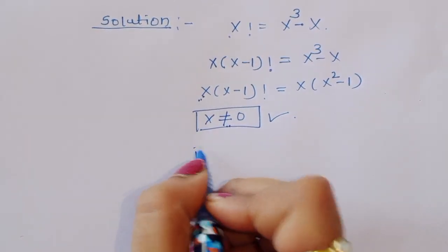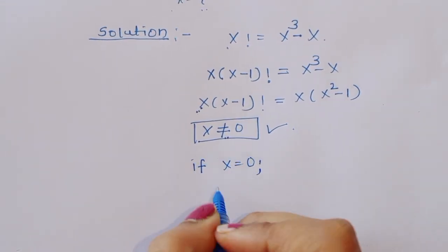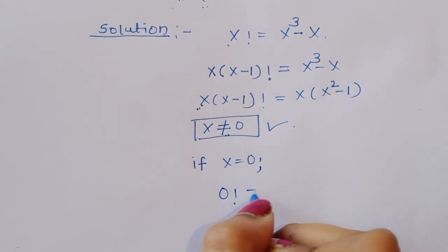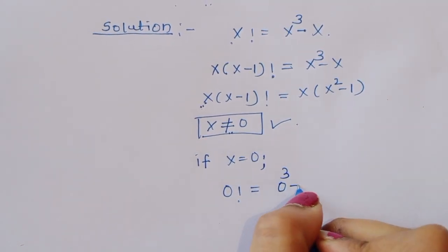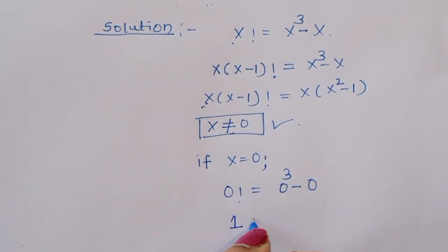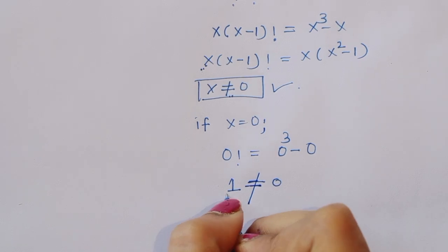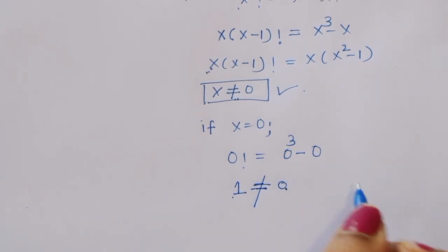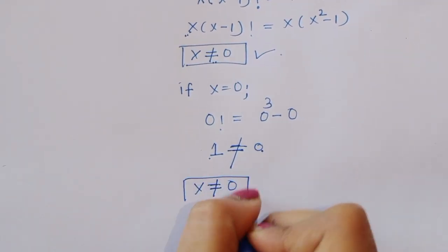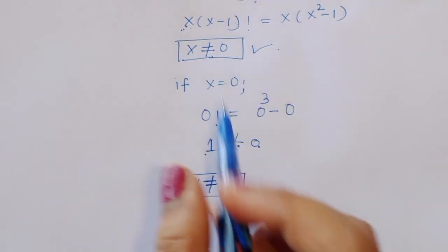If we substitute x equal to 0, then factorial of 0 equals 0 cubed minus 0. Factorial of 0 is 1, which would equal 0 — but this is not possible; 1 is not equal to 0. Therefore x is not equal to 0, and we can safely divide the equation by x.